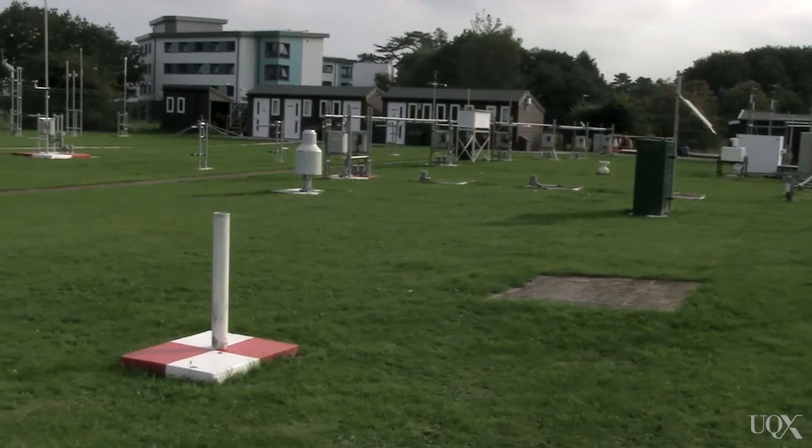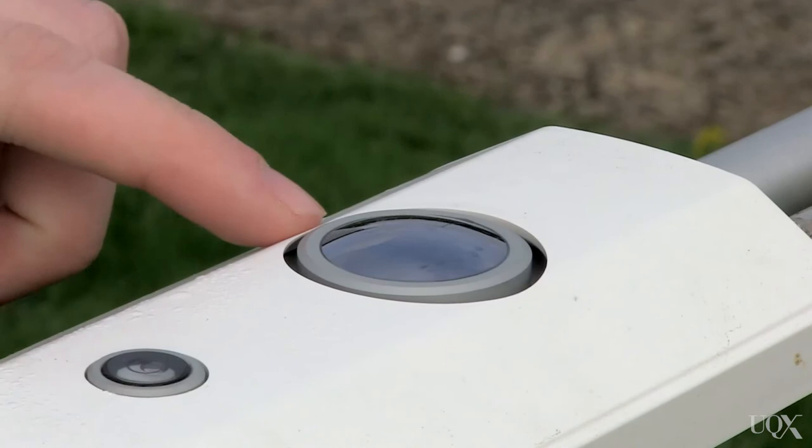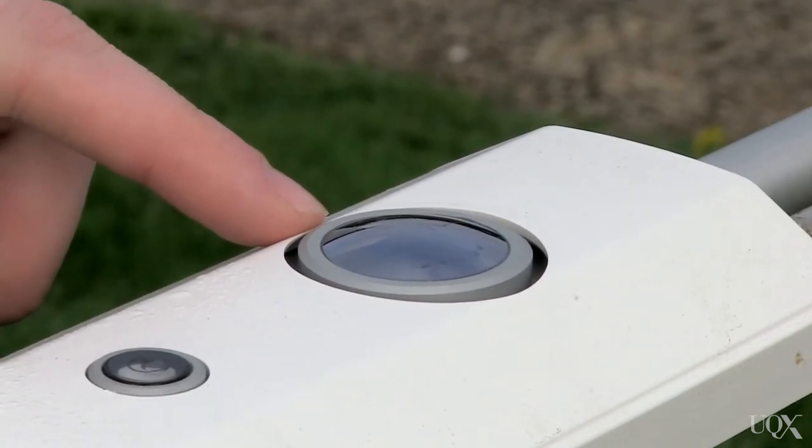We measure it every day here at the University of Reading Atmospheric Observatory. And this is a pyrgeometer. It has a special window that only allows infrared light through to be measured. Even during a cloudless night, it measures the constant warming greenhouse glow.